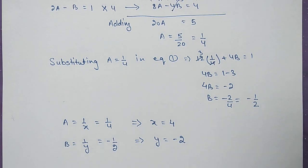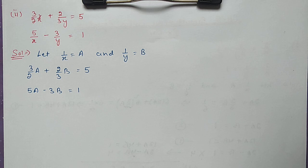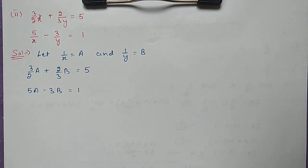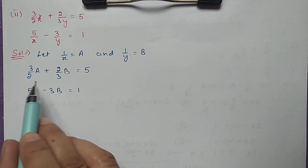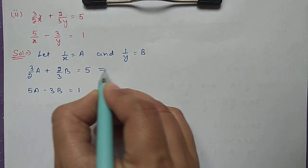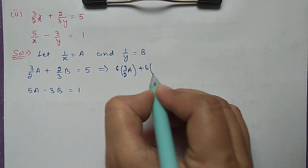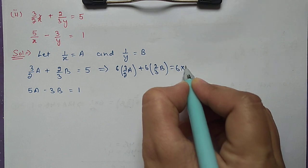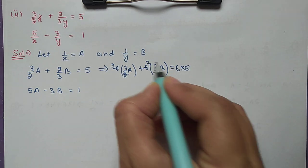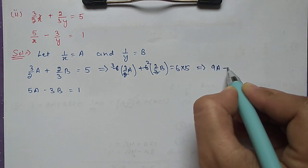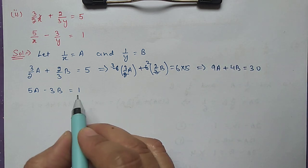You can apply any method for this exercise as no specific method is required. For the second part of question 1: 3/2x plus 2/3y equal to 5, and 5/x minus 3/y equal to 1. We do the same thing — let 1/x equal to a and 1/y equal to b. For the first equation, the LCM of 2 and 3 is 6, so we multiply by 6: 6 into 3/2a plus 6 into 2/3b equal to 6 into 5, giving us 9a plus 4b equal to 30.